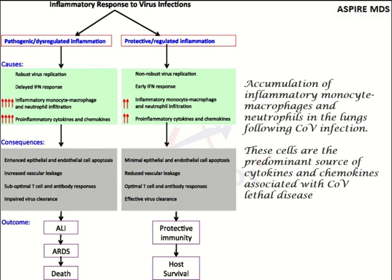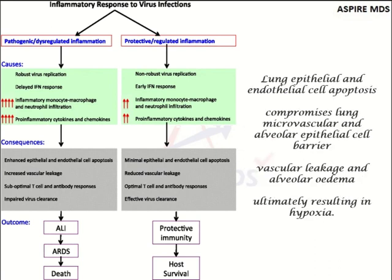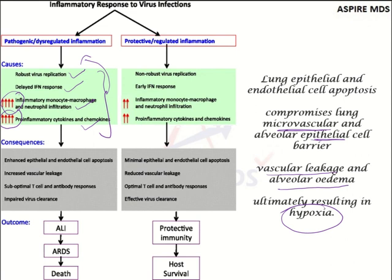The third point: high viral replication in pathogenic inflammation leads to delayed interferon response, which ultimately leads to accumulation of monocytes, macrophages, and neutrophils — all inflammatory cells — in the lung following infection. These cells are the predominant source of cytokines and chemokines. These cytokines lead to damage to the lung epithelial cells and microvascular cells, ultimately causing vascular leakage, alveolar edema, and hypoxia. Robust viral replication, delayed interferon response, high inflammatory cell infiltration, and high cytokine release are all features of pathogenic inflammation.